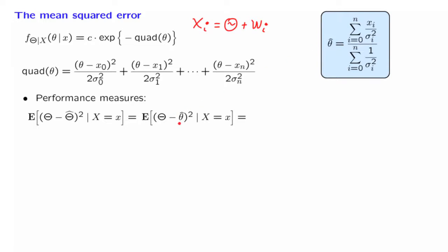Remember also that theta hat, the estimate we're using, is the mean of the posterior distribution. In this conditional universe, where we have conditioned on this information, theta hat is the mean of this random variable. So we're dealing with the expected squared distance from the mean, which is nothing but the variance of theta in this conditional universe — the variance of the posterior distribution of theta given the observations.